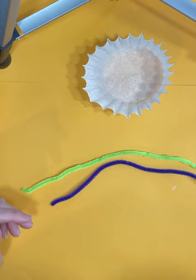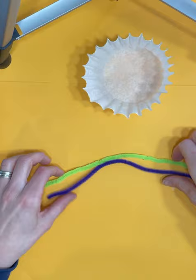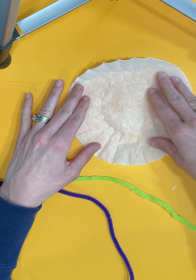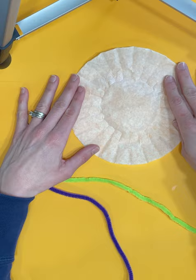Hi everybody, this activity is called a coffee filter parachute. The materials are pretty simple. All you need are two pipe cleaners, any color, and one regular coffee filter. If you would like to design your parachute, the coffee filter is going to act as your parachute. You can color it in or paint it with watercolors.